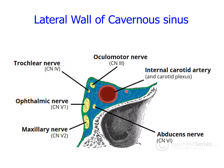This image depicts the lateral wall of the cavernous sinus with important structures including the internal carotid artery, the third cranial nerve (oculomotor), the fourth (trochlear), and the sixth (abducens). These three nerves are primarily responsible for innervation of the extraocular muscles. The oculomotor innervates all extraocular muscles excluding the superior oblique and lateral rectus. The superior oblique is innervated by the trochlear and the lateral rectus by the abducens nerve. The ophthalmic and maxillary divisions of the trigeminal nerve are also visible in the lateral wall of the cavernous sinus.